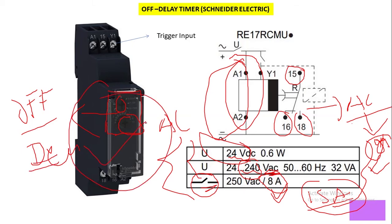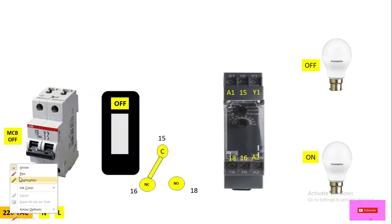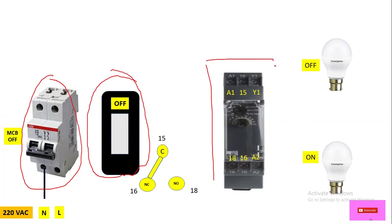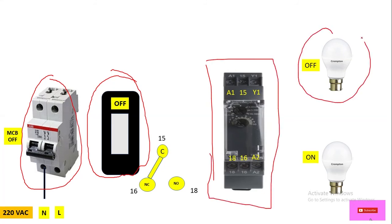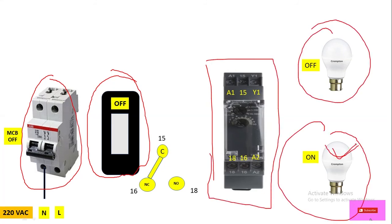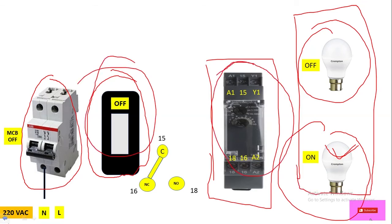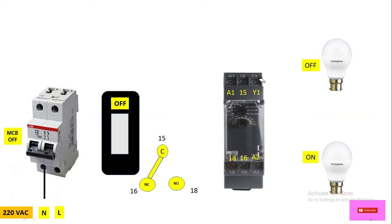Here I have taken a double-pole MCB for the main supply, and this is a one-way switch which we use for triggering this timer. This is the off-delay timer, and these are the loads which we are going to control through this timer with the help of this switch. We have a 220 volt AC supply source.